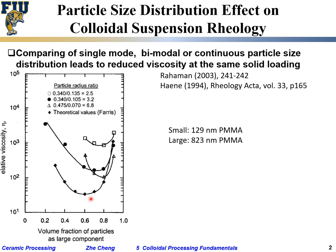On the other hand, if we keep the same larger-to-smaller particle size ratio and compare across different experiments, what you find is that the viscosity is lower when the size ratio is larger. Going from square to triangle, the particle size ratio is actually getting larger, and for the same relative volume fraction of large to small particles, you get a lower relative viscosity.